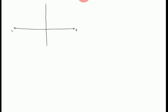Now we draw again coordinate axes: X axis, X dash, Y, Y dash. We label: 0, 1, 2, 3, minus 1, minus 2, minus 3, minus 4 on one axis, and 1, 2, 3, 4, minus 1, minus 2, minus 3 on the other.